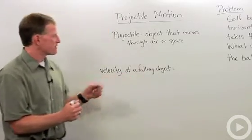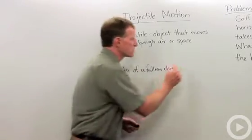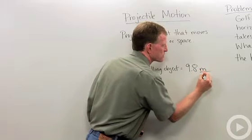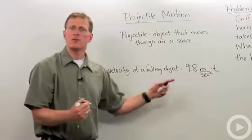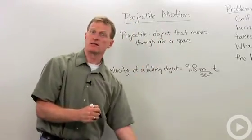Just to review, the velocity of a falling object under the force of gravity is equal to 9.8 meters per second squared times time. That's how we can calculate the velocity at any given time after an object is released.